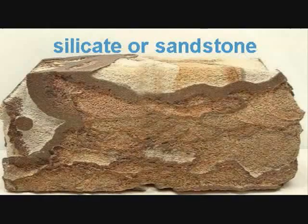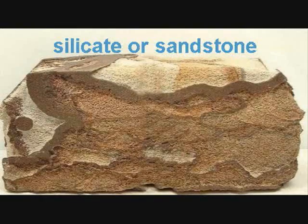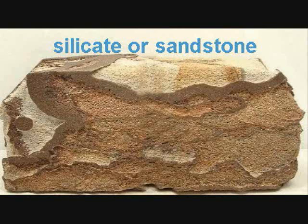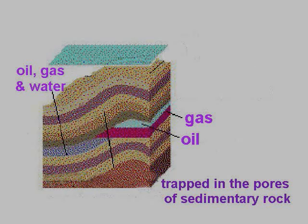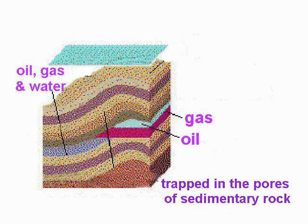Silicate, or sandstone, was formed when the layers that were laid down contained silicate particles of varying sizes. Around Lewa, you can see examples of sandstone. In the UAE, most of the oil is found in limestone.